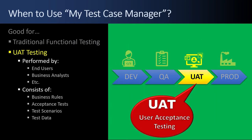I've used the template heavily across multiple companies in the traditional functional testing role, but I'm planning on using it for UAT testing in my current role. That is testing performed by end users or business analysts, etc. It consists of testing the business rules, acceptance tests, having test scenarios, having test data, etc. It typically happens in stage or PPMO environments, but you can track your UAT testing this way as well.